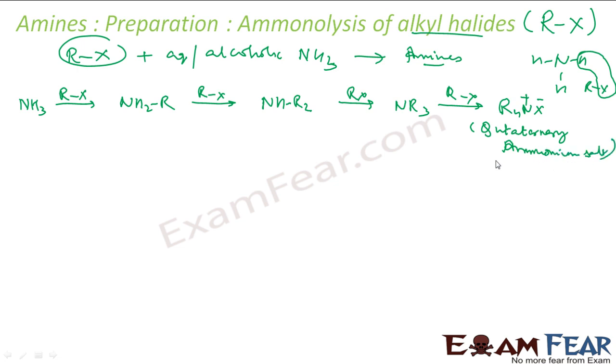This is how it happens. You add R-X, one hydrogen is replaced with R, add one more R-X, and another hydrogen is replaced with R. This process is called ammonolysis. Here, the C-X bond breaks in R-X by NH3. The ammonia is the one which breaks this R-X bond or C-X bond.